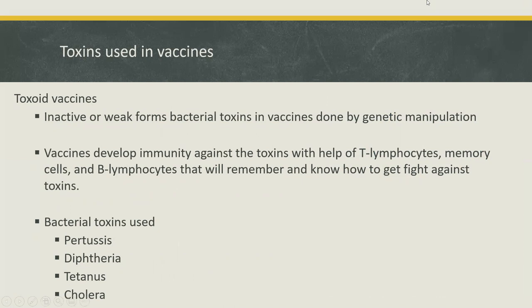Although detrimental to the susceptible host during infection, the activities of several bacterial toxins have been exploited as probes to carry out cellular pathways and for medicinal applications. Inactive or weak forms of bacterial toxins are used in vaccines through a chemical treatment called toxoid vaccines. This is done by genetic manipulation of the toxin genes to create a detoxified bacterial toxin that can be injected into the host.